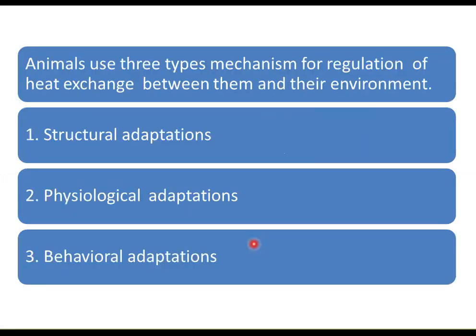Animals use three types of adaptations or mechanisms for regulation of heat exchange between them and their environment. These are: structural adaptations, physiological adaptations, and behavioral adaptations.